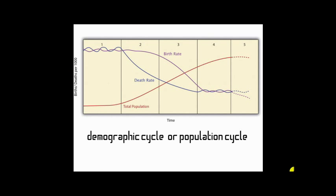In short, the Demographic Transition Model graphs the birth rate, death rate, and the natural increase, otherwise known as the growth rate. If the birth rate is greater than the death rate, the population will increase. If the death rate is greater than the birth rate, the population will naturally decrease. The greater the difference, the greater the rate of natural increase, also known as the growth rate.